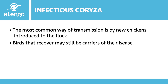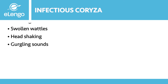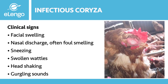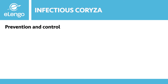What are the signs that your flock has been infected by infectious coryza? You will notice facial swelling, as shown in the illustration on the slide. You will also notice nasal discharge that often has a foul smell. The birds will sneeze, have swollen wattles, tend to shake their heads, and produce a gurgling sound.